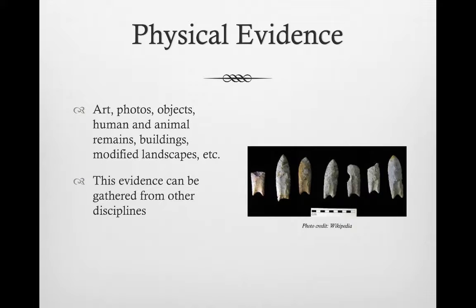Another type of evidence historians use is physical evidence. Physical evidence can be created by humans, such as art, photography, objects, and buildings. Physical evidence can also be shaped or influenced by humans, such as landscapes. Think of battlefields or archaeological sites. Human and animal remains are also helpful types of evidence. Physical evidence is especially important for ancient history, before the introduction of written records. Historians often gather this evidence from other disciplines, for example, archaeology.